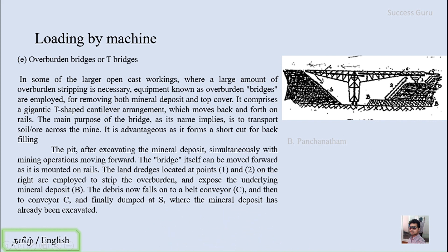The bridge itself can be moved forward as it moves on rails. The land dredges located at points one and two on the right are employed for stripping both overburden and the mineral deposit. The debris falls onto conveyor belt C, which transports the overburden to the backfill area at S, where the mineral deposits have already been excavated. The mineral deposit is transported to the mineral processing unit.